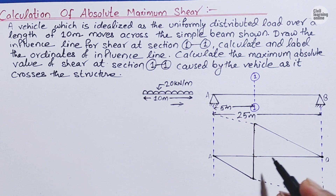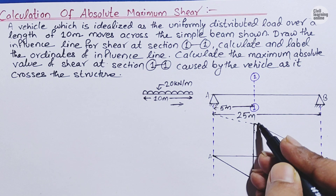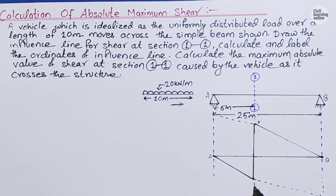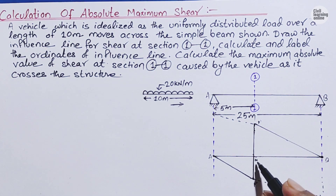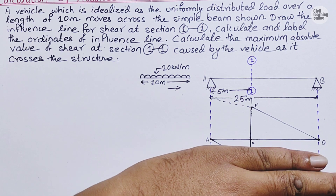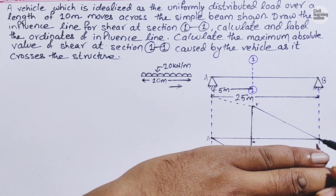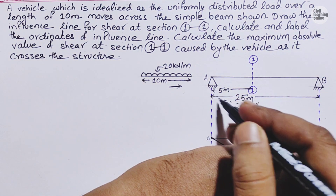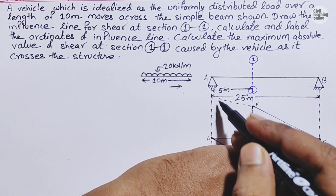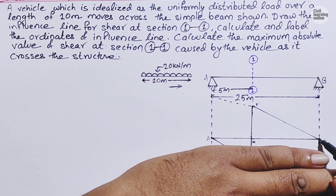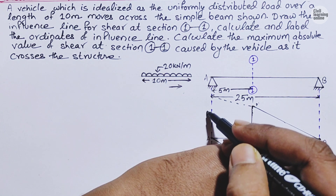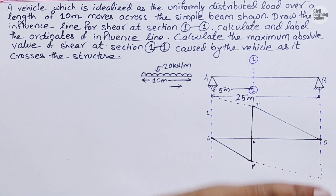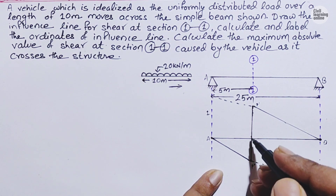Let us name the key points: P-dash, P-double-dash, and M. We need to calculate the heights P-dash M and P-double-dash M. To find these ordinates, cover the lower portion and look at the bigger triangle. The height of this line increases from 0 to 1. For calculating the ordinate in shear, we simply use the formula: ordinate equals X upon L.